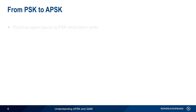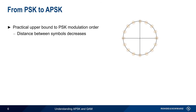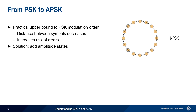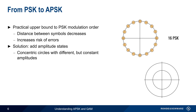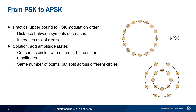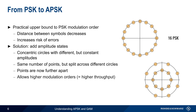What about PSK? PSK also has a practical upper bound to modulation order. Because all the symbols lie on a single amplitude circle, the distance between the symbols decreases as the modulation order, or the number of states, increases. When the states are very close together, errors become more likely. One solution to this problem is to add amplitude states — in other words, our constellation now has multiple concentric circles, each with a different but constant amplitude. We can then distribute the points across these different circles so they're further apart, reducing the risk of error and allowing higher modulation orders, thus increasing throughput.